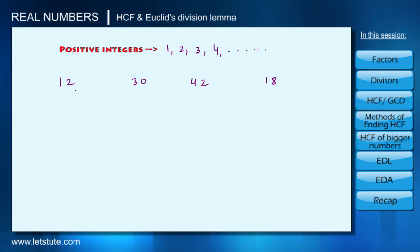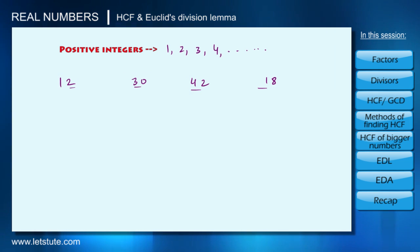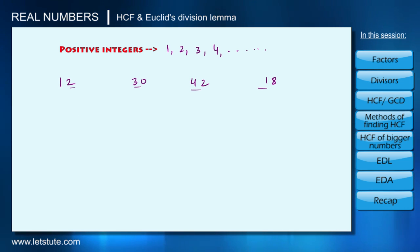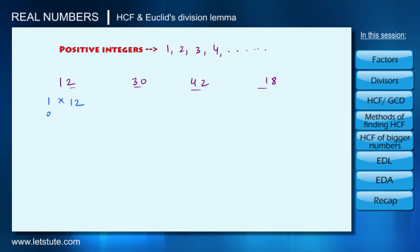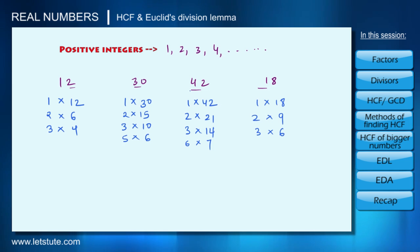As soon as we look at these numbers we see that they are all different, but there is something common between them. To find that common thing, let me first write these positive integers as a product of two numbers. For 12: we can write 12 as 1×12, also as 2×6, and also as 3×4. This is the only possible way of writing 12 as a product of two numbers. Similarly we can do this for 30, 42, and 18.